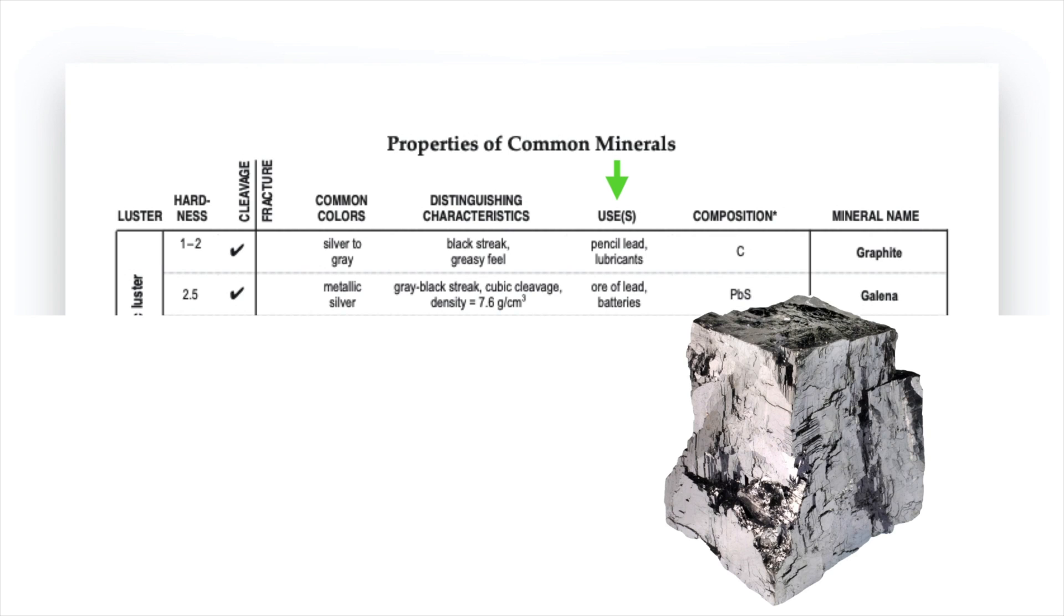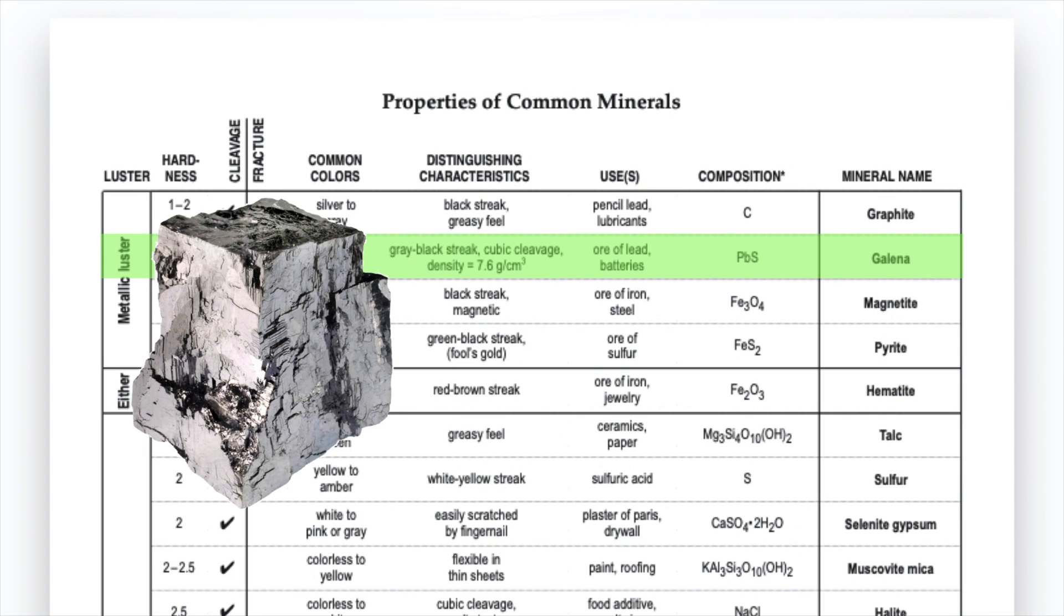As for uses, I can see what they're both used for and that's interesting but not terribly helpful nor is what elements they're made of. So I'm actually going to jump back to color here. Now again color is not a great characteristic to use because there's so much variety in the mineral world but in this case graphite is silver to gray and then galena they make a point of saying it's metallic silver. And that's certainly how I would describe this sample. So I can, based on that, go ahead and conclude that this sample is in fact galena.